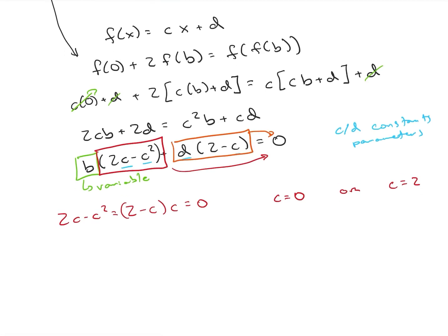If we look at our second equation where we have d times 2 minus c equals 0: If c equals 0 then 2d equals 0 and d equals 0. If c equals 2 then we have 0 times d equals 0 which will work for any d value.